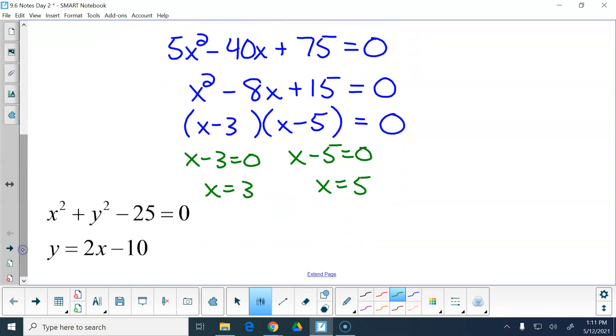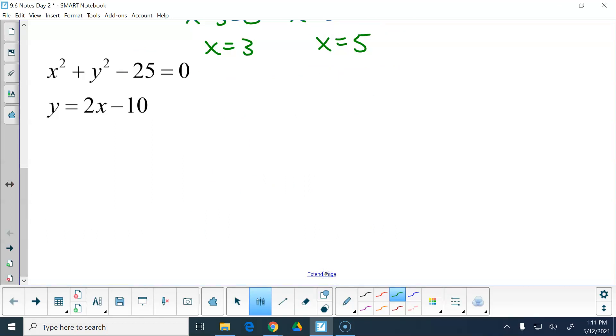So we have two potential intersection points. Now we plug both back into either one of the original equations. I'm going to choose to plug them into this one. If I go x equals 3, then that would be y equals 2 times 3 minus 10. 2 times 3 is 6, minus 10 is negative 4. Then I've got to plug in x equals 5. 2 times 5 is 10, minus 10 is 0. So this top one gets me to point 3 comma negative 4. This bottom one gets me to point 5 comma 0.